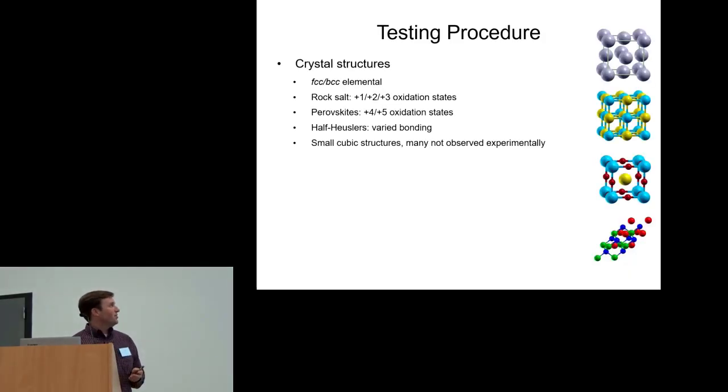The testing suite I designed includes FCC and BCC elemental tests, also rock salt structures to test low oxidation states, perovskites to test some higher oxidation states, and half-Heuslers. Those have a combination of covalent bonding, metallic bonding, but they still have a very simple crystal structure, only three atoms.